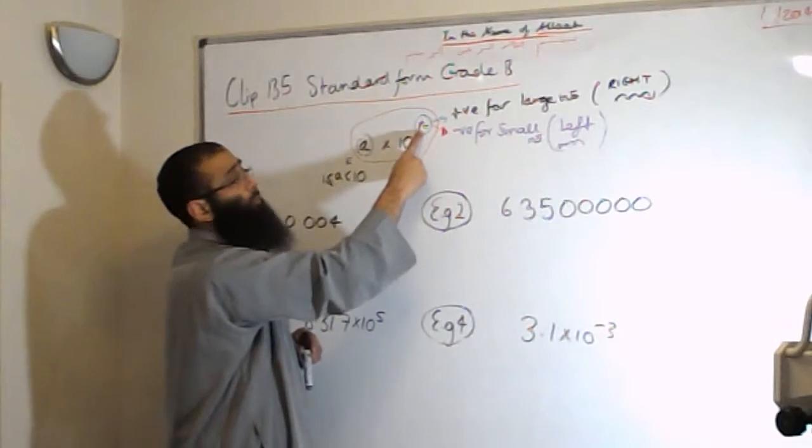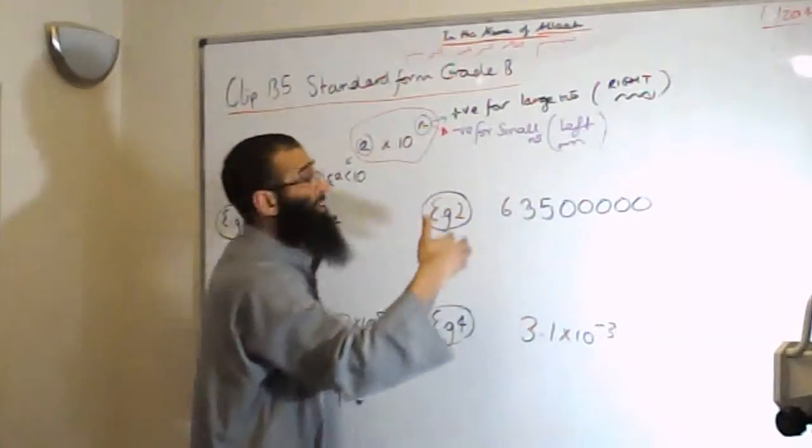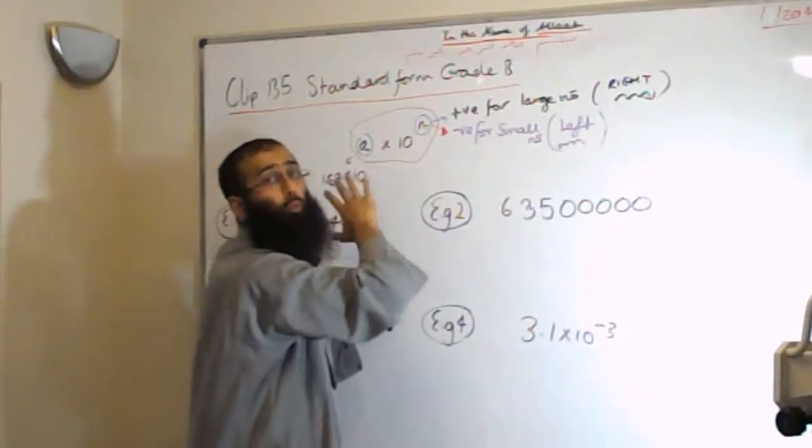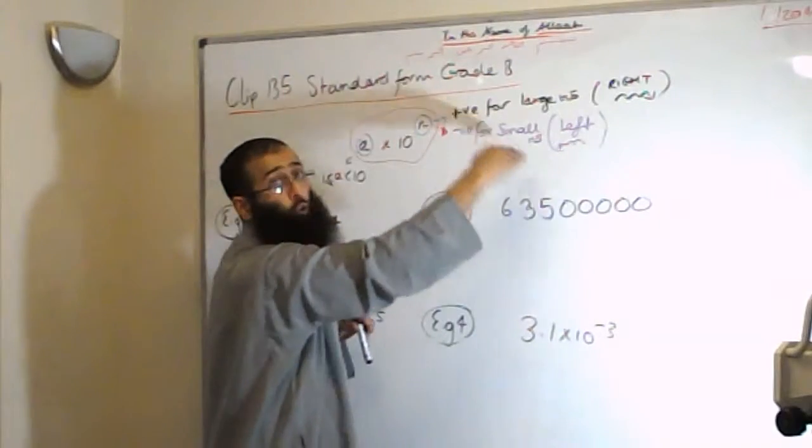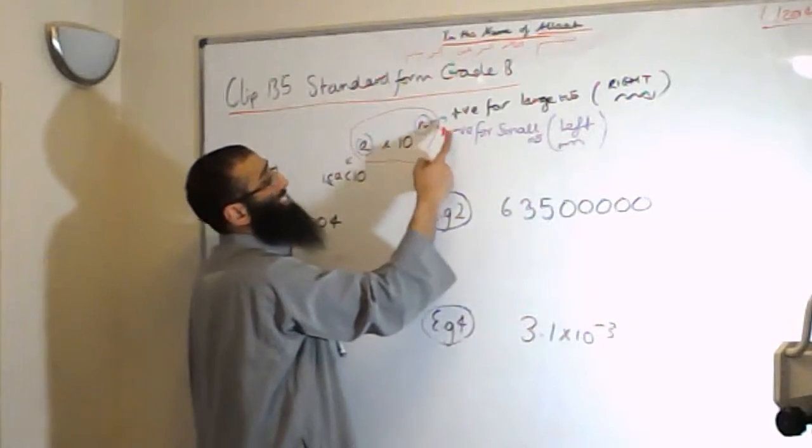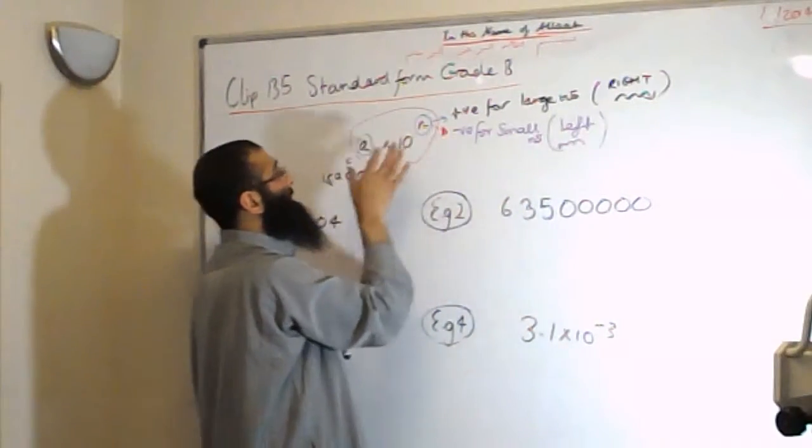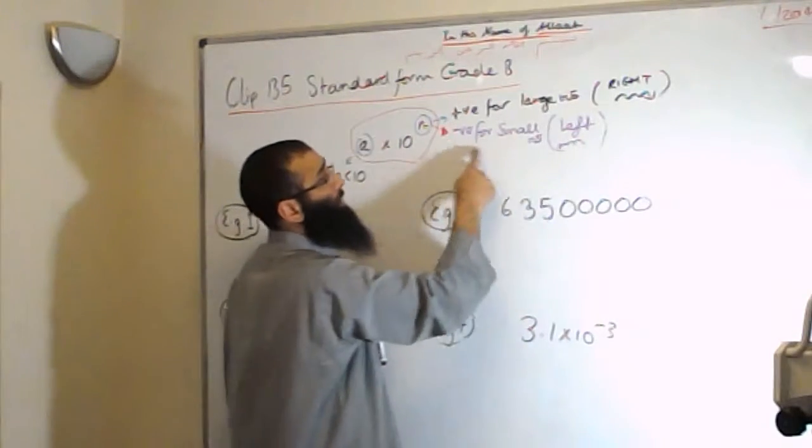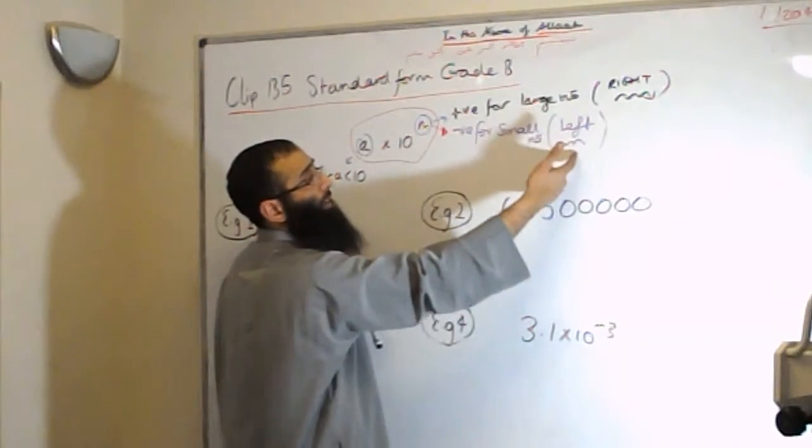Now, if this is a positive number, that indicates it's a large number, and it also indicates when we unpack the number, we'll be moving towards the right. If n is negative, this indicates that the number represents a small number, and then to get back to the original number, we have to move to the left.